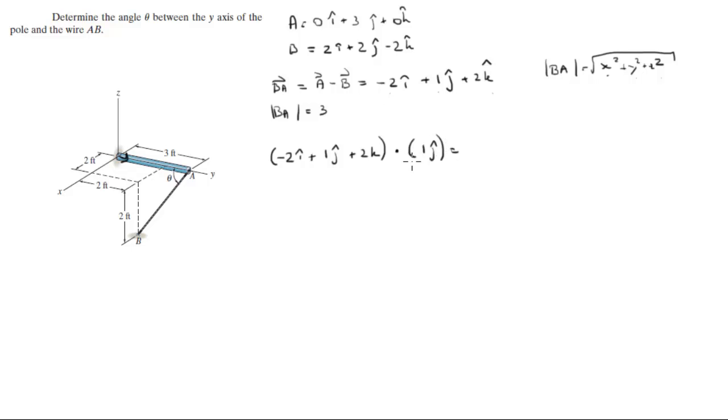This is equal to negative 2 times the i component which is 0, is 0, plus 1 times 1 is 1, plus 2 times 0 because the k is still 0, is 0. So the dot product is equal to 1.